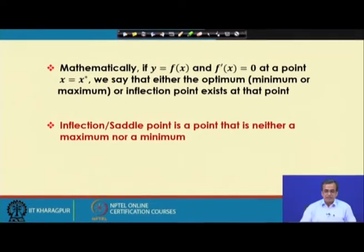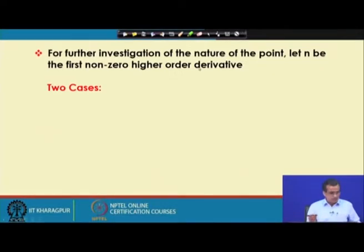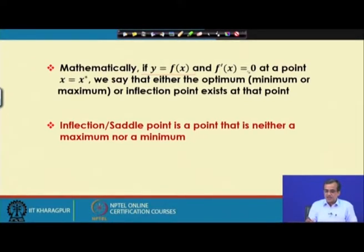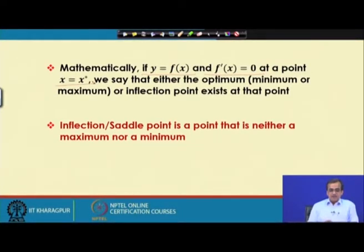Mathematically, if you want to represent what optimization means, let me take the example y equals to f(x) — a function of only one variable. What we do is we try to find out the first derivative, that is f prime of x, and we put it equal to 0. We solve for x, and suppose we are getting x equals to x star. At x equals to x star, there could be either an optimum solution or there could be an inflection point.